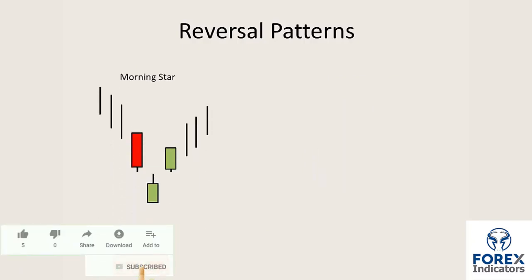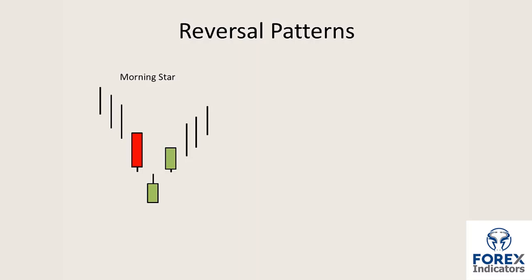Here we have a three-candle pattern setup known as a morning star — a bullish three-candle reversal pattern. The first candle will be red and bearish. Then the market will gap down to the second candle body, and that candle body can be of either colour — here shown as green. Then the third candle will also have a green real body, ideally gapping up from the star candle, which is the second candle. So we have a move down, then a further gap down, then a gap up forming the third candle.